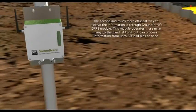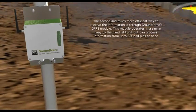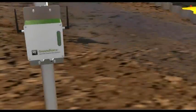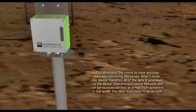The second and much more efficient way to receive the information is through GroundForce's GPRS module. This module operates in a similar way to the handheld unit, but can process information from up to 30 struts at once. This eliminates the need to have anybody manually monitoring the struts.